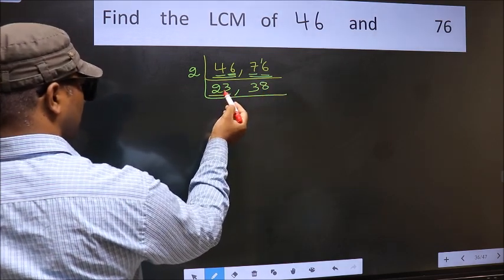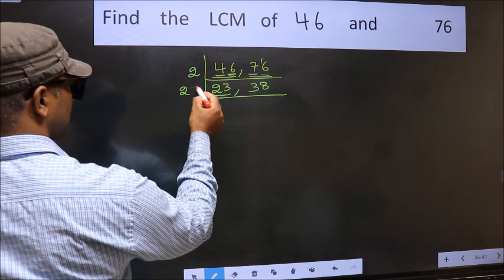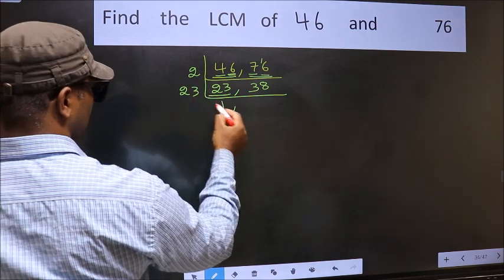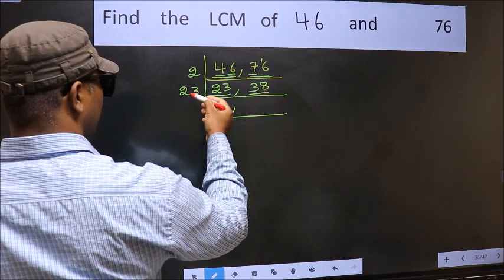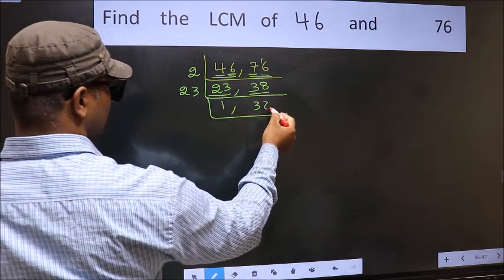Now here we have 23. 23 is a prime number. So 23, 1 is 23. The other number 38. Not divisible by 23. So we write it down as it is.